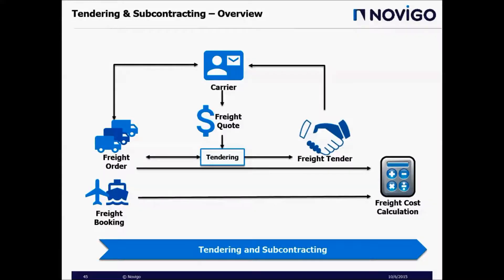This flowchart belongs to the overview of tendering and subcontracting in SAP Transportation Management. Freight orders can be tendered to different carriers through this process, and freight cost calculation can be triggered at the end of this tendering process. Since freight bookings use predefined schedules and carriers have already been assigned to these schedules, there is no need for tendering for freight bookings.